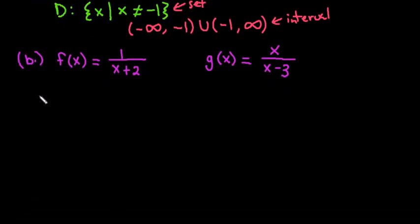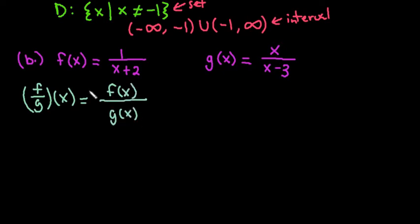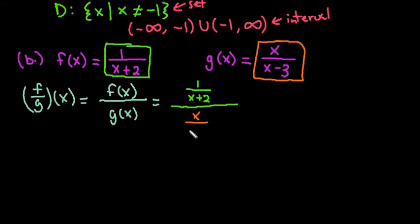For this one, we are going to do f divided by g of x. What we're going to do is take our f(x) equation and divide it by our g(x) equation. This one is a little more complicated because of the fact that we have fractions. I would take my f(x) equation, which goes in the numerator - so I would have 1 over x + 2 - and then I'm going to put it all over my g(x) equation. So I would do x over x - 3.